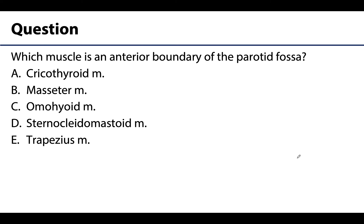The correct answer is the masseter muscle, which together with the ramus of the mandible — which it lies superficial to — forms the anterior boundary of the parotid fossa. The cricothyroid muscle is quite a ways off and is associated with the larynx. The omohyoid is a strap muscle; while it's important in many anterior cervical triangle subdivisions, it does not play a role in the parotid fossa. The sternocleidomastoid muscle does play a role in the parotid fossa, but it is a posterior boundary, not an anterior boundary. And lastly, the trapezius is too posterior.